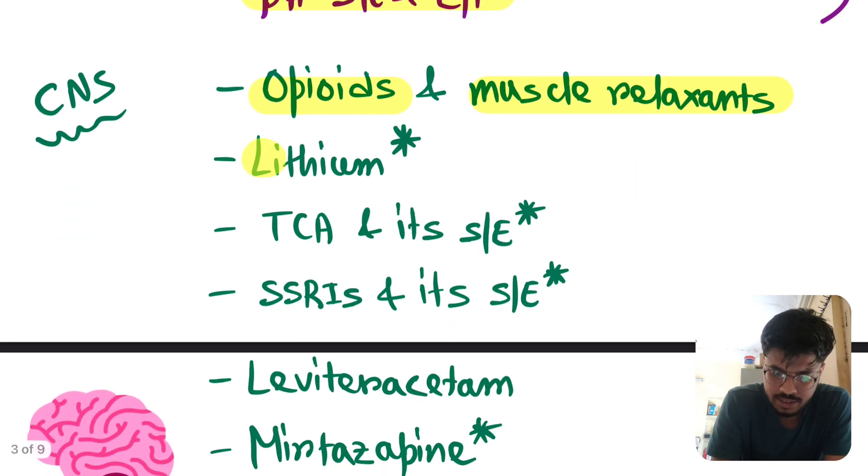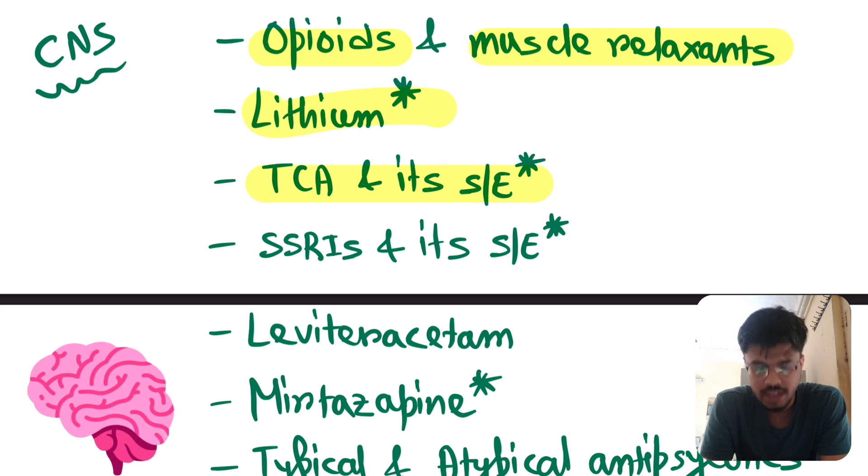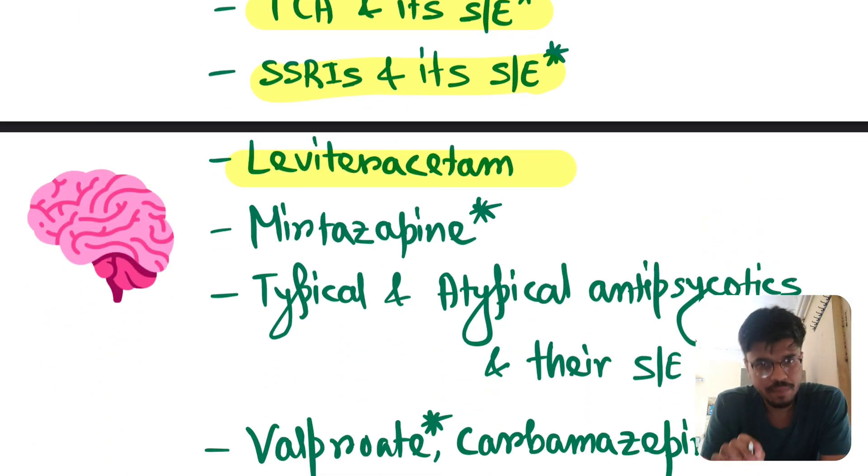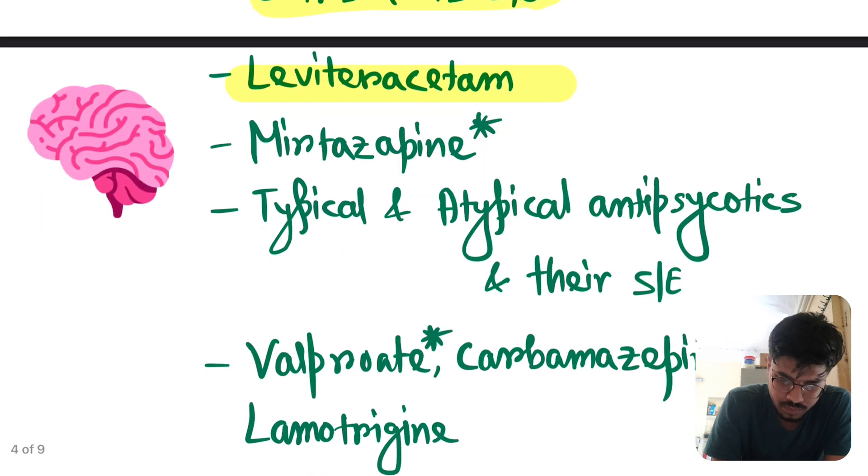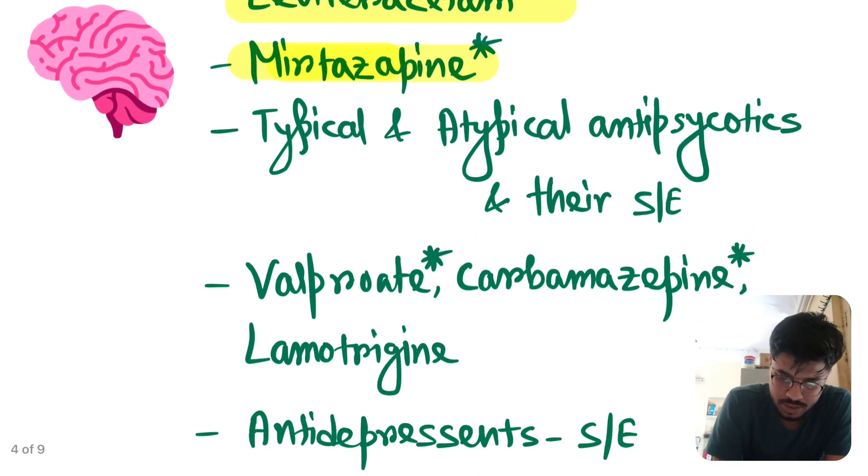In CNS, opioids and muscle relaxants. Lithium. This is an important drug. In every one to two years, there is a minimum one question from lithium. And you know, it has anti-suicidal effect. This question is also repeated. TCA and its side effect. SSRI and its side effect. Levetiracetam, mechanism of action.